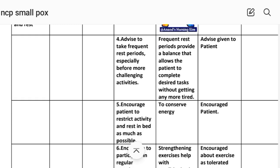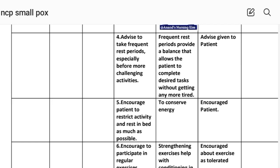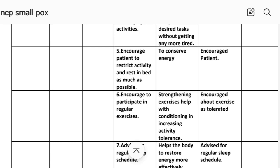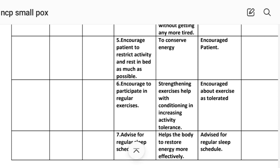Intervention number four: advise the patient to take frequent rest periods, especially before more challenging activities. Rational: frequent rest periods provide a balance that allows the patient to complete desired tasks without becoming more tired. Implementation: advice given to patient. Intervention number five: encourage the patient to restrict activity and rest in bed as much as possible. Rational: to conserve energy. Implementation: patient encouraged.